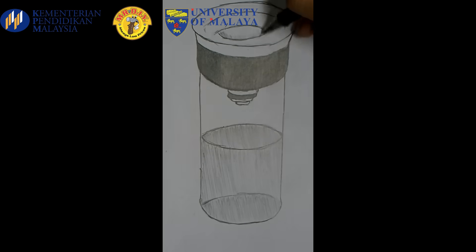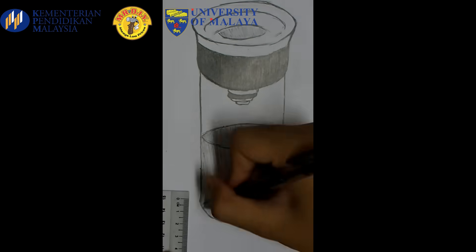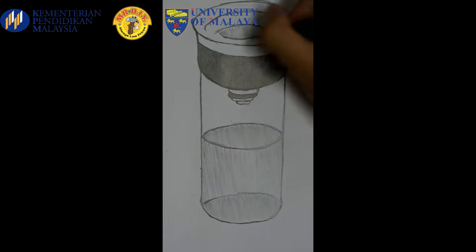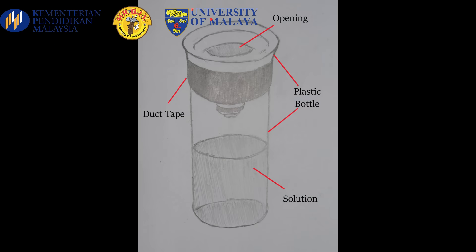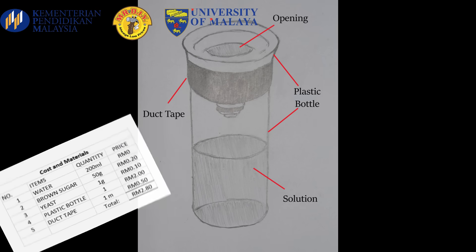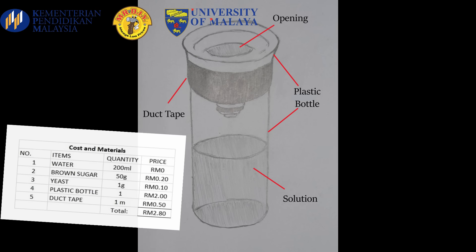This causes the mosquitoes to be trapped permanently in the mosquito trap. We are using a plastic bottle and duct tape to construct our product. These are the materials we are using in the course of it.